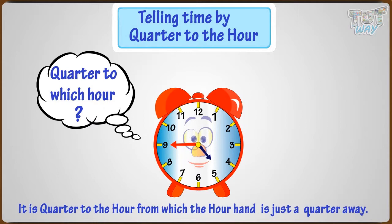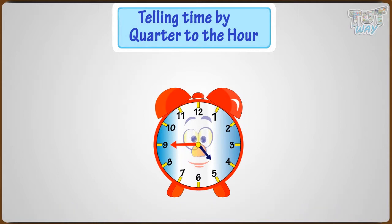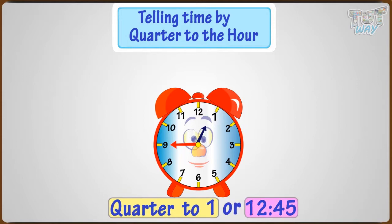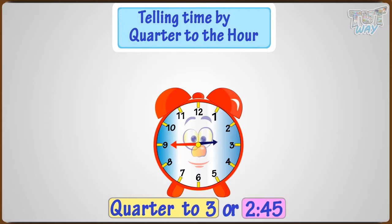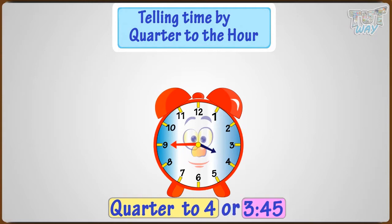Also, we have two ways of telling the time by quarter to the hour: quarter to one or twelve forty-five, quarter to two or one forty-five, quarter to three or two forty-five, quarter to four or three forty-five. Good!